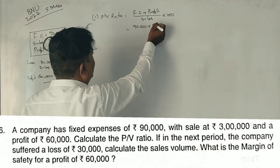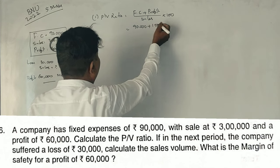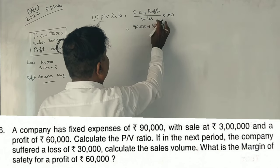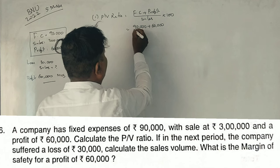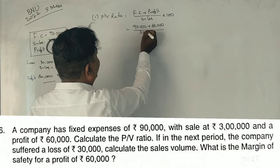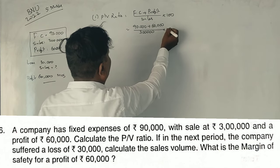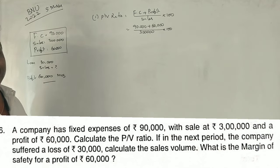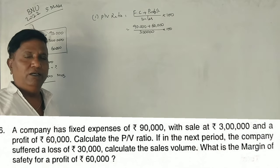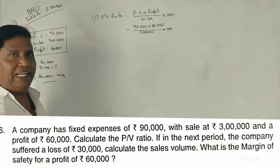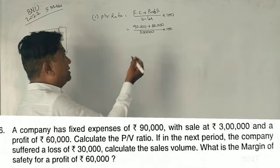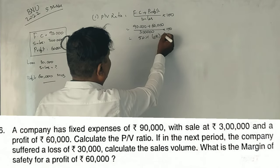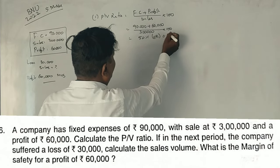Profit is 60,000. Sales is 3 lakhs. So, 90,000 plus 60,000 is 1,50,000. Divided by 3,00,000. So, PV ratio is 50% or 0.50.